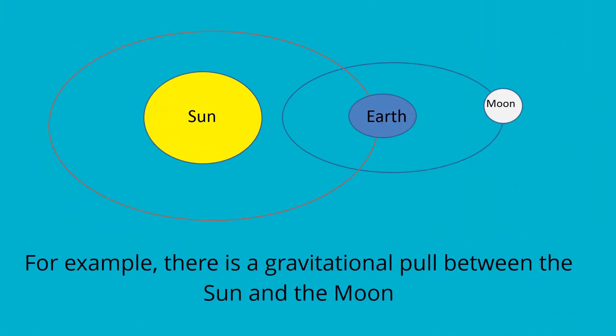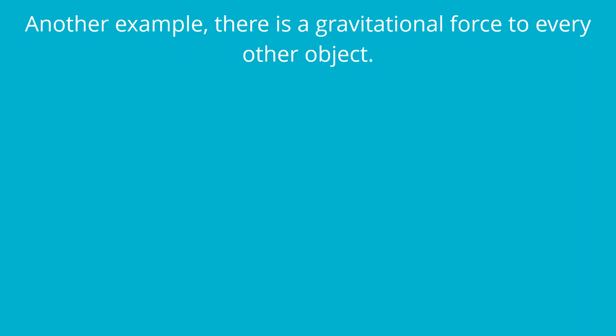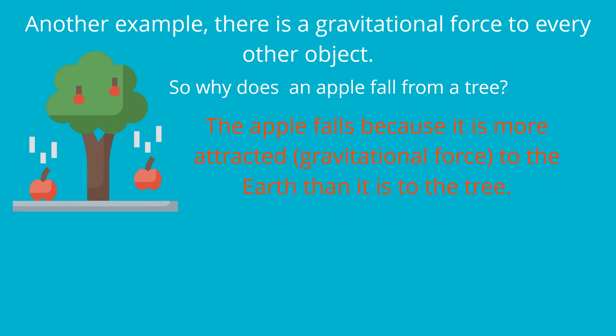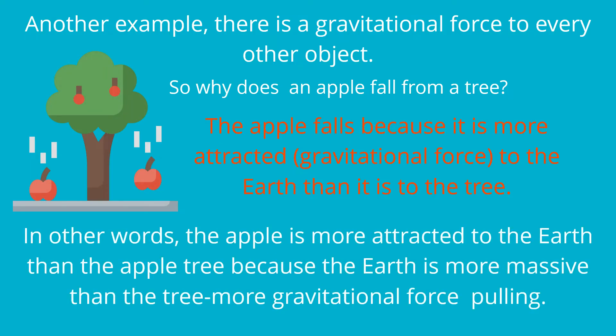For example, there is a gravitational pull between the sun and the moon. Another example, there is a gravitational force to every other object. So why does an apple fall from a tree? The apple falls because it is more attracted to the Earth than it is to the tree. In other words, the Earth is more massive than the tree, so there is more gravitational force pulling.